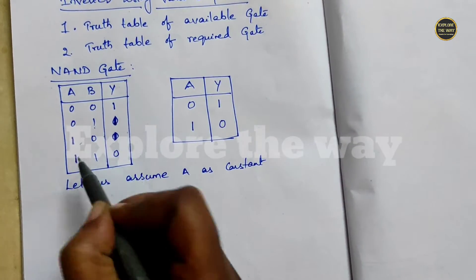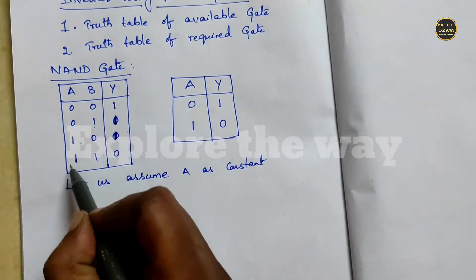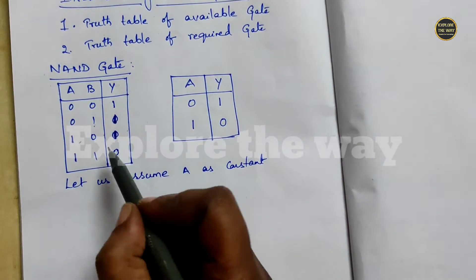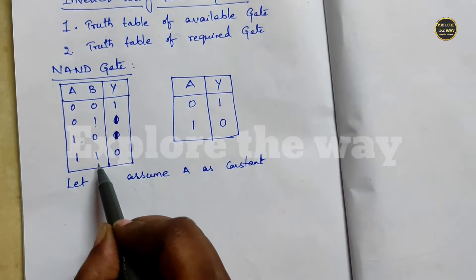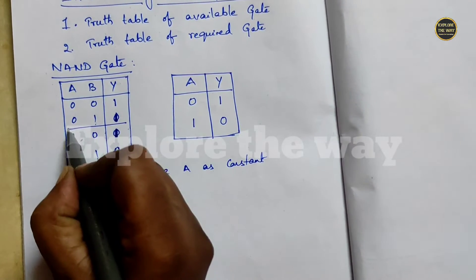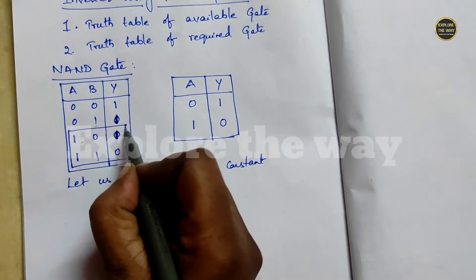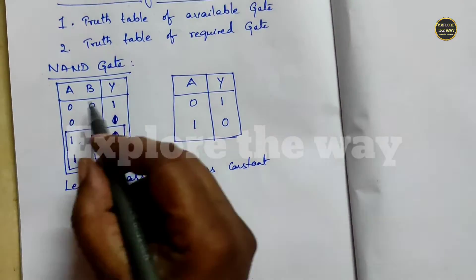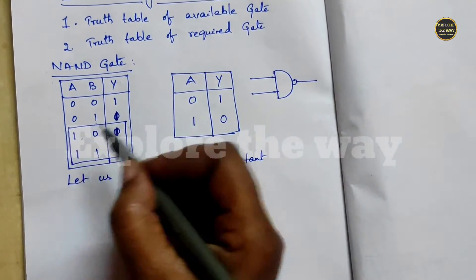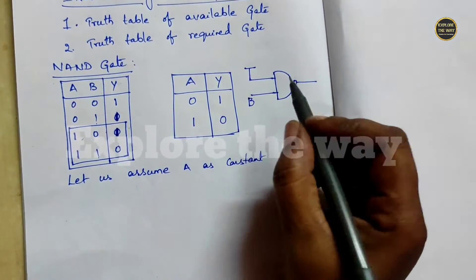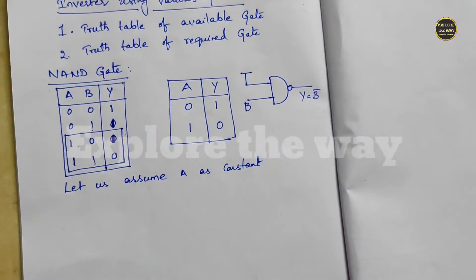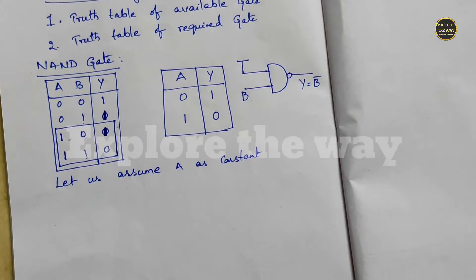If we make A equal to 1, then the output is the complement of the second input B. If B is 0, output is 1; if B is 1, output is 0. This is the inverter functionality. So in the NAND gate, input A is equal to 1 and the second input is B, then Y equals B-bar. It acts like an inverter.